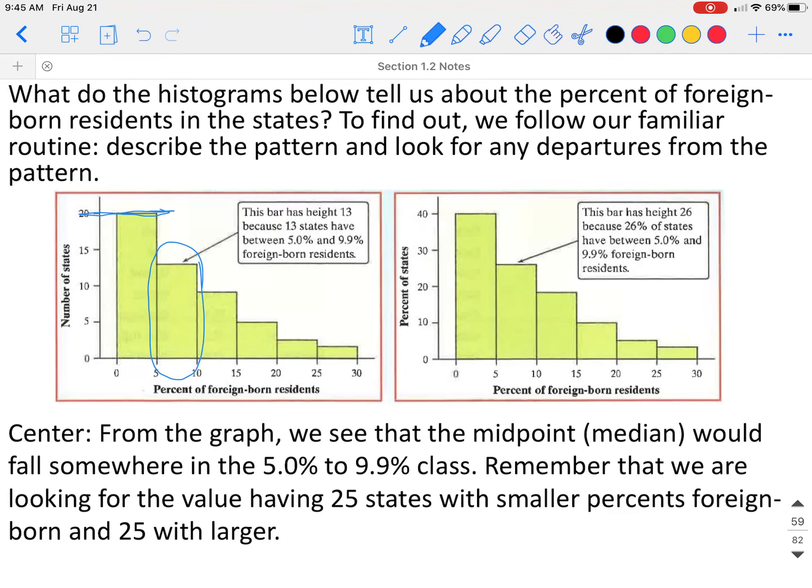We can look at the count here and see that we have 20 states that fall in this bar, and this bar goes up past 10. So if we need to get to 26, it would definitely be somewhere in this bar. When you're reading a histogram, if you're finding the median, you will just say in which class it is located. So the median would be located in the class from 5.0% to 9.9%.